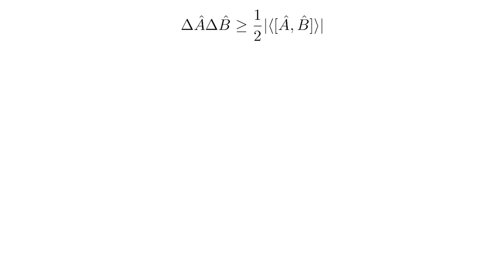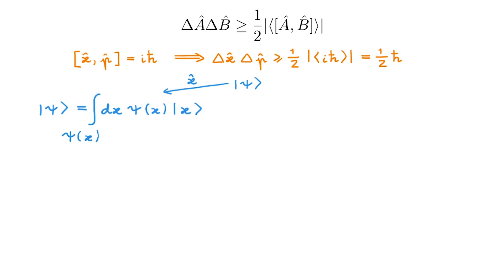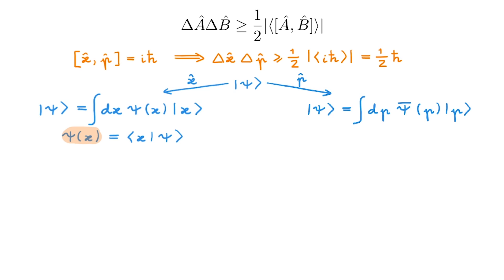Before we finish, it is worth relating our discussion to the more familiar uncertainty principle between position and momentum operators. These operators obey the canonical commutation relation, and substituting it into the general form gives us the usual expression that delta x times delta p is larger than or equal to one half h-bar. Position and momentum are continuous variables, so when we write the state psi in the position basis we have an expression in terms of an integral rather than a sum. In this case we typically call the expansion coefficients psi(x), given by the usual bracket — this psi(x) is of course what we call the wave function in quantum mechanics. We have a similar expansion in the momentum basis, where the representation is in terms of momentum wave functions psi-bar(p).